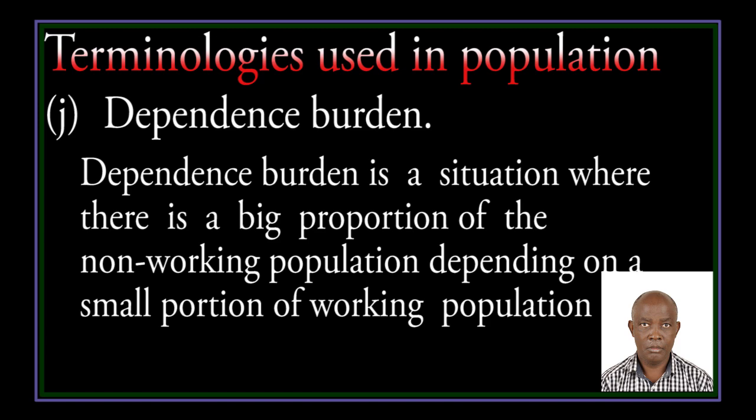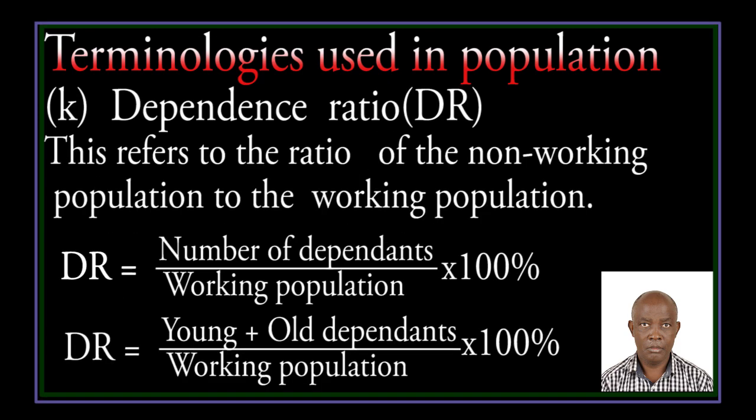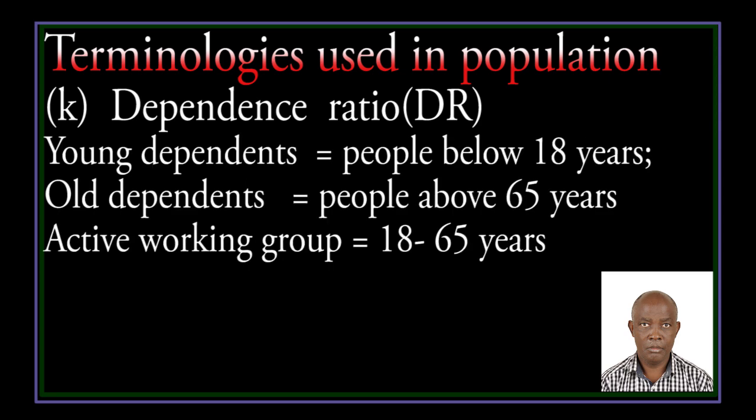Dependence burden is a situation where there is a large proportion of non-working population depending on a small portion of the working population. Dependence ratio refers to the ratio of non-working population to the working population. It equals younger dependents plus older dependents, over the working population, times 100%. Younger dependents are people below 18 years, older dependents are people above 65 years, and the active working group is 18 to 65 years.